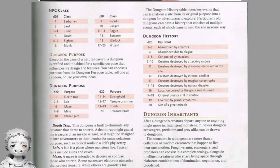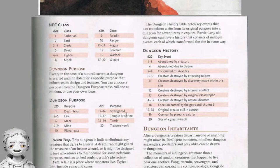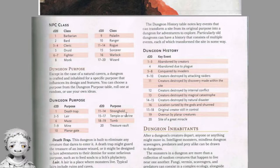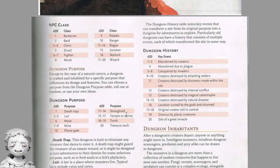Dungeon history: in most cases the original architects are long gone, and what happened to them shapes the dungeon's current state. The dungeon history D20 table includes: abandoned by creators; abandoned due to plague; conquered by invaders; creators destroyed by attacking raiders; creators destroyed by a discovery made within the site; destroyed by internal conflict; by magical catastrophe; by natural disaster; location cursed by the gods and shunned; original creators still in control; overrun by planar creatures; or site of a great miracle. Building dungeons is apparently risky business — you can get destroyed a lot, or conquered, but you could also roll that miracle if you're very lucky.